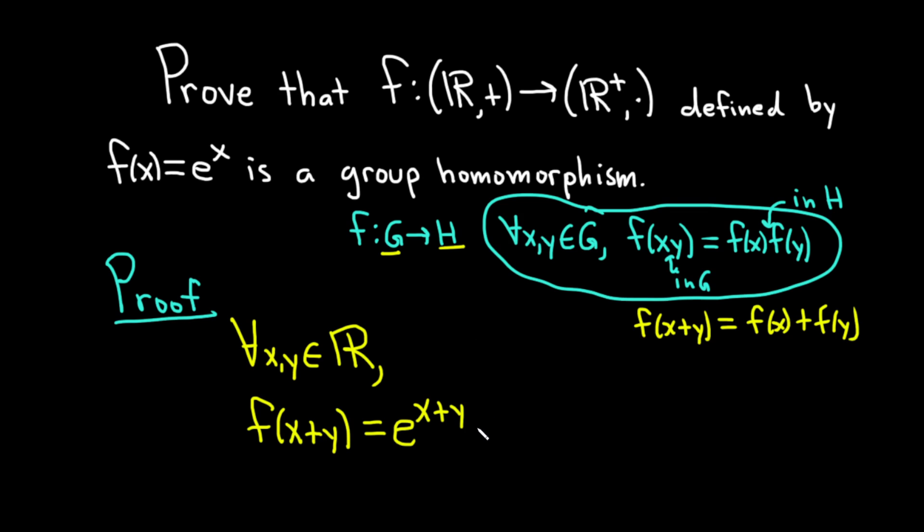So this is e to the x plus y. And now we can use properties of exponents. This is e to the x times e to the y. Very powerful stuff there. Simple and basic, but very powerful. And then we know something about e to the x. That's equal to f of x. And we know something about e to the y. It's equal to f of y.